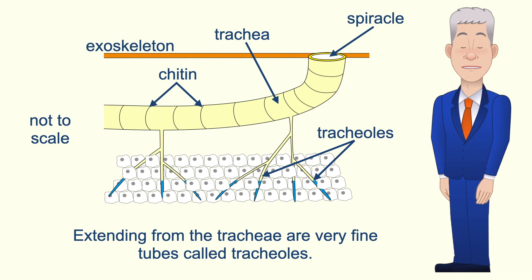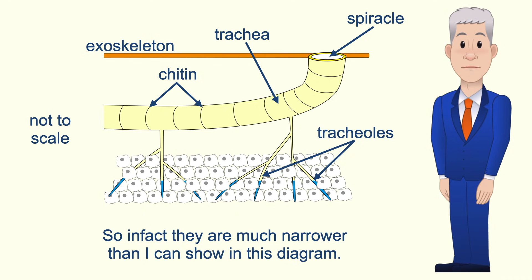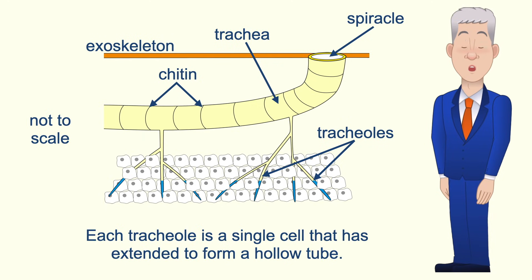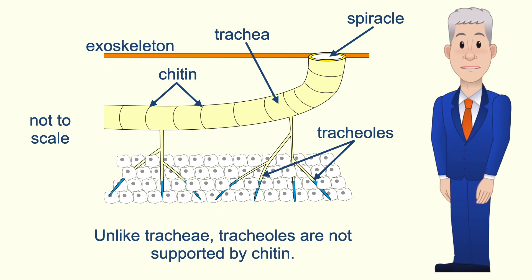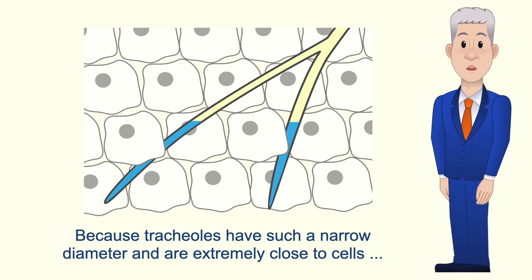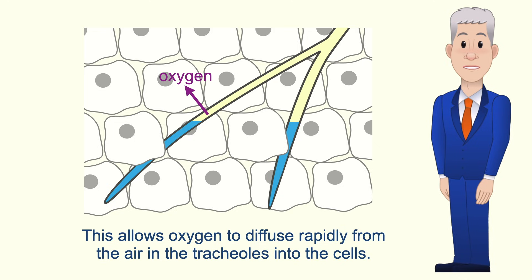Extending from the tracheae are very fine tubes called tracheoles. Tracheoles have a diameter of around one micrometer or less — much narrower than can be shown in a diagram. Each tracheole is a single cell that has extended to form a hollow tube, and a huge number of tracheoles extend down in between the cells of the insect's body. Unlike tracheae, tracheoles are not supported by chitin. Because tracheoles have such a narrow diameter they are extremely close to cells, creating a very short diffusion distance for gases moving between the cells and the tracheoles. This allows oxygen to diffuse rapidly from the air in the tracheoles into the cells.